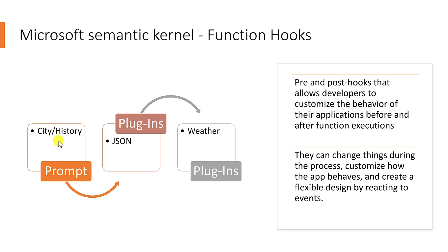Once we get the result, this information we pass to the JSON to extract city and history information separately. Then this JSON is used to pass the city name to the weather plugin, and we get the result. So far, this is the way we implemented it.